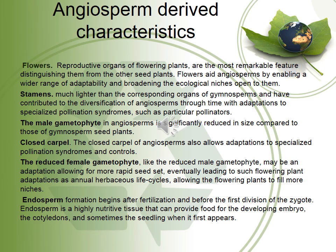Stamens, much larger than the corresponding organs of gymnosperms, have contributed to the diversification of angiosperms through time, with adaptations to specialized pollination syndromes such as particular pollinators. The male gametophyte of angiosperms is significantly reduced in size compared to those of gymnosperm seed plants. The closed carpel of angiosperms also allows adaptations to specialized pollination syndromes. The reduced female gametophyte may be an adaptation allowing for more rapid seed development, eventually leading to adaptations such as annual herbaceous life cycles, allowing flowering plants to fill more niches.